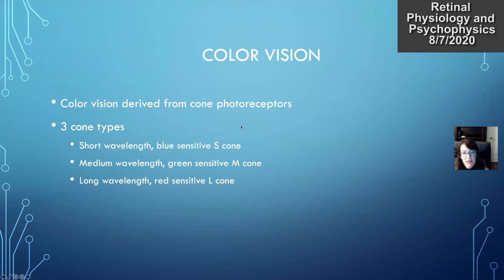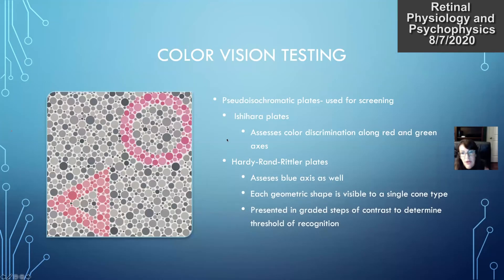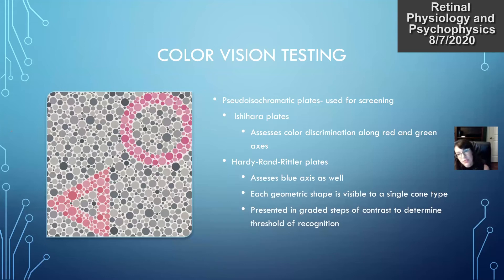Color vision is derived from cone photoreceptors. There are three types: short wavelength blue-sensitive S-cones, medium wavelength green-sensitive M-cones, and long wavelength red-sensitive L-cones. Color vision testing is done very commonly in clinic using pseudo-isochromatic plates — it's a very quick test and good for screening. It doesn't tell you the type of color deficiency, but tells you if one is present. The Ishihara plates assess color discrimination along the red-green axis, while the Hardy-Rand-Rittler plates also look at the blue axis.